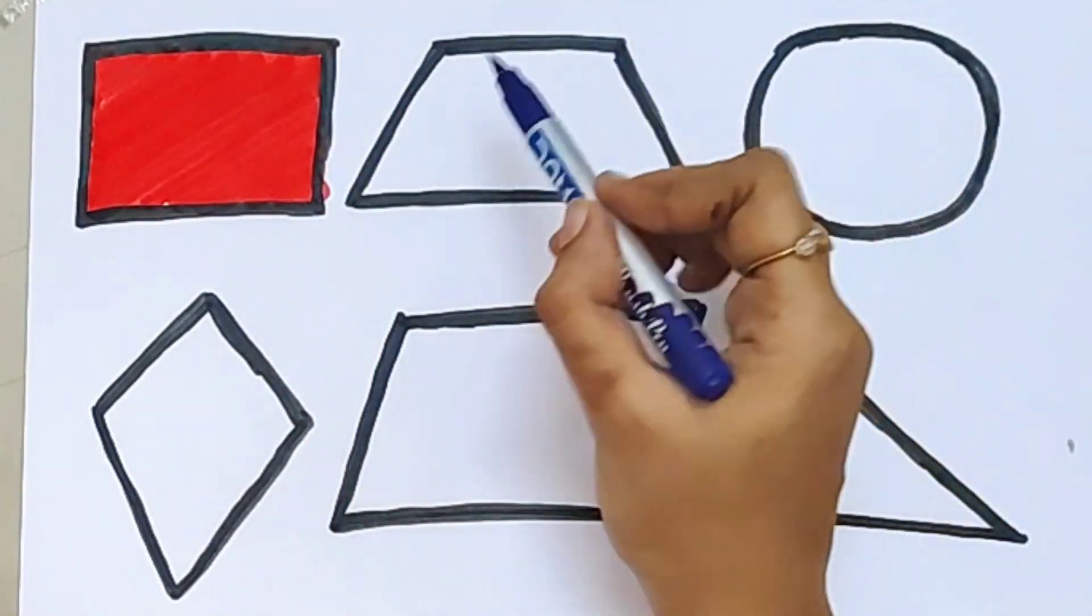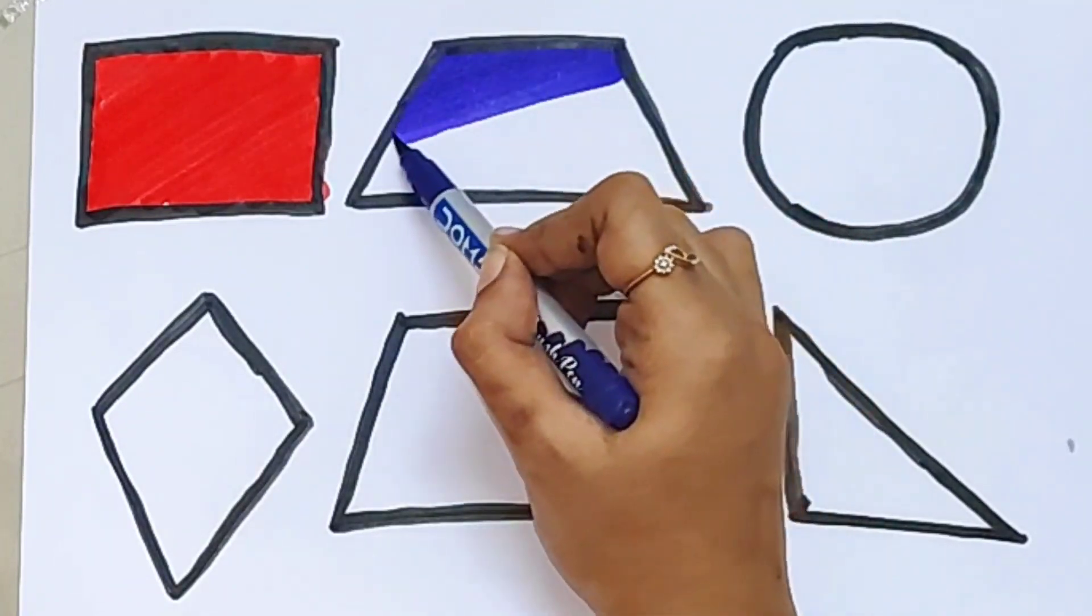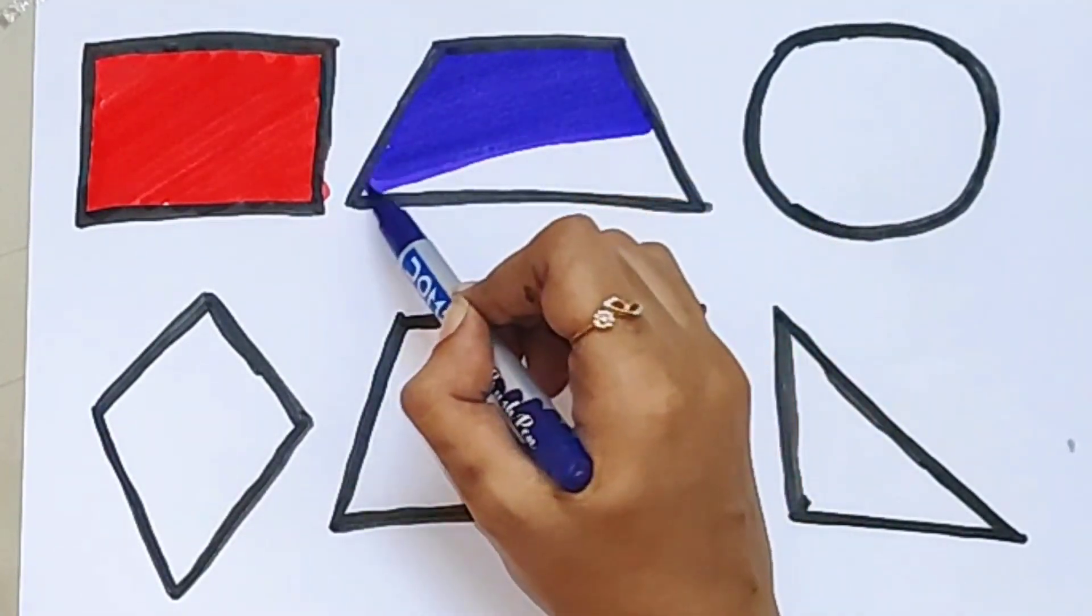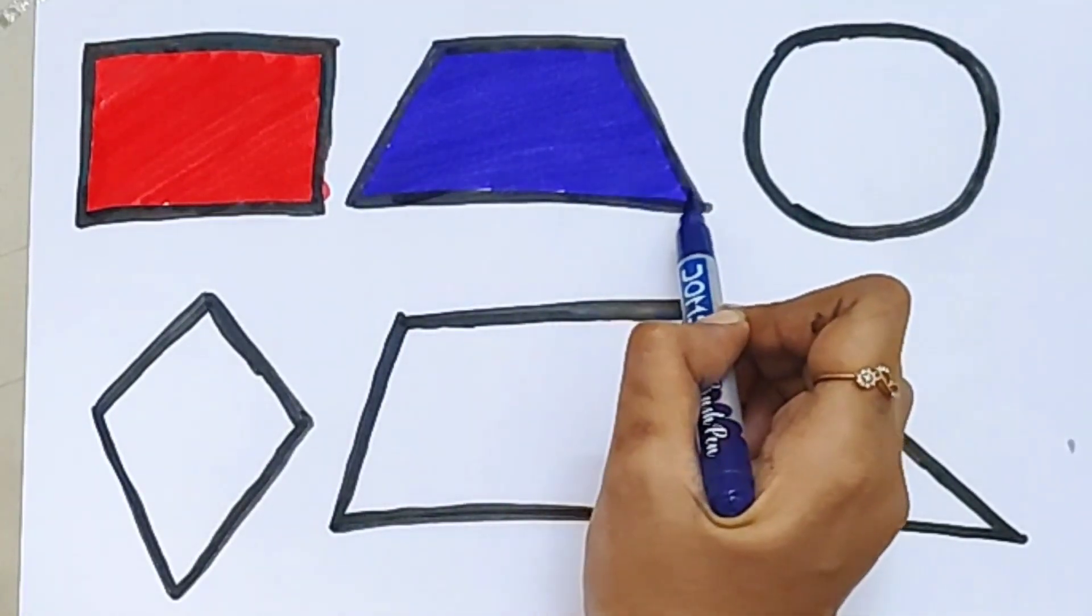This is violet color. What color is this? Violet color. This is a violet trapezoid.